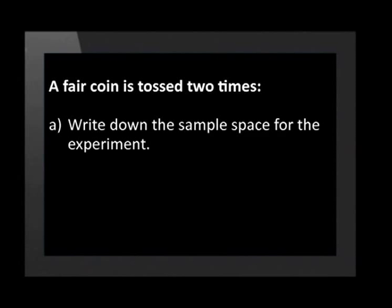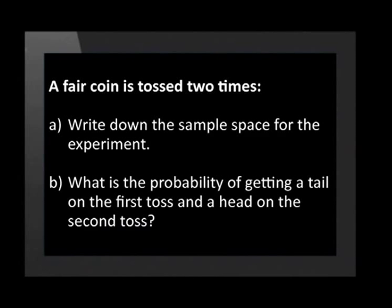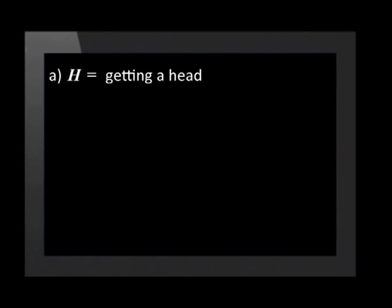Let's look at an example to reinforce this concept. A fair coin is tossed two times. Write down the sample space for the experiment. What is the probability of getting a tail on the first toss and a head on the second toss? Let H be the event getting a head and let T be the event getting a tail.